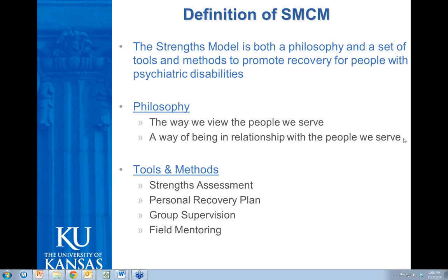From a philosophical perspective, in the strengths model we view that any person we come in contact with has the capacity to make significant strides in their own journey of recovery. A lot of that's based on the fact that we are very poor predictors of who will recover their life and who doesn't. So we don't try to make that arbitrary choice. Whether a person has been using substances for 27 years or spent a good portion of their life in and out of hospitals, we engage with everyone believing that people can make strides in their recovery. There's hope and expectancy embedded within this model.